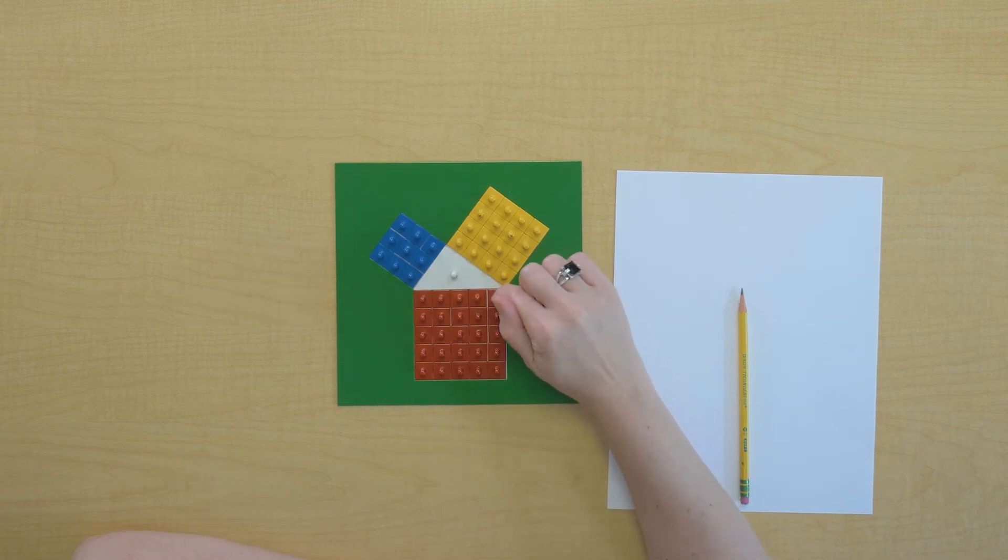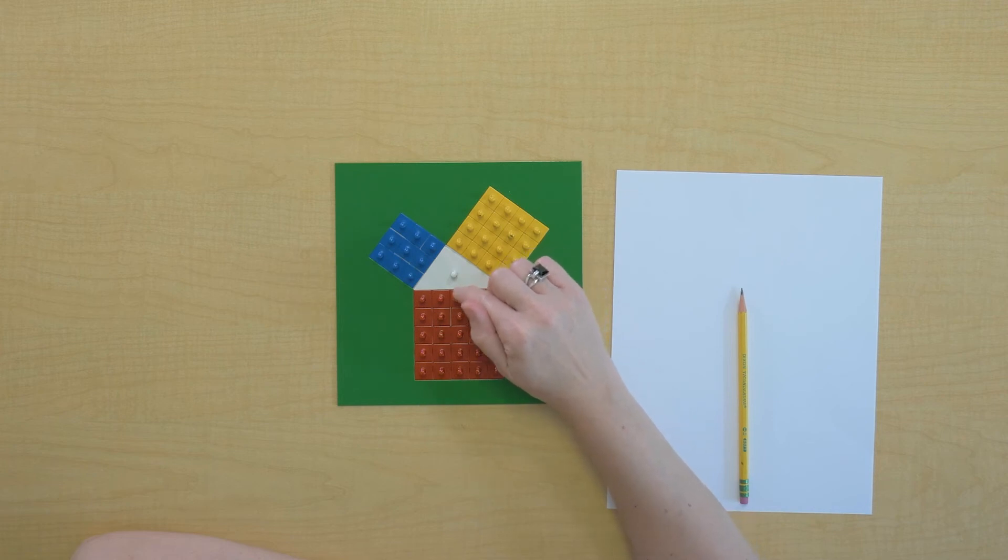And the hypotenuse, I can see has a length of one, two, three, four, five.